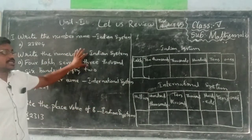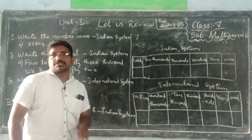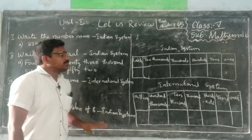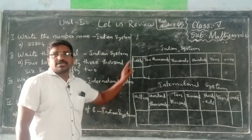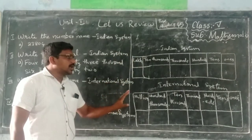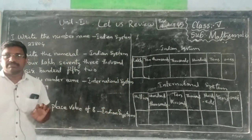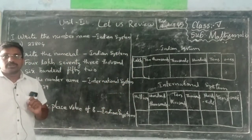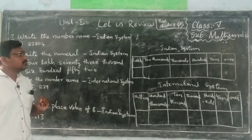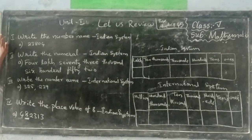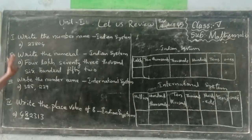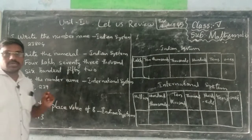Last year we studied about the number system — it is our first chapter. In the number system, there are two types: one is the Indian number system, and another one is the International number system. In our Indian number system, we studied how to write numbers in numerical form and verbal form. Both we studied last year.